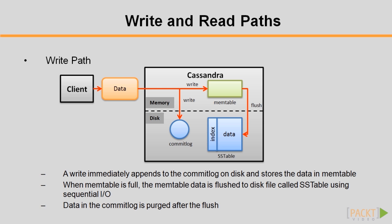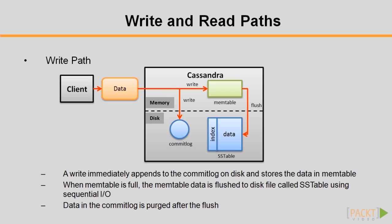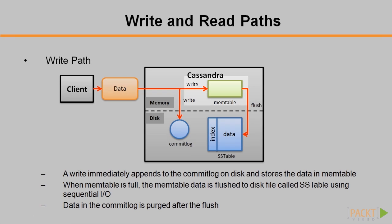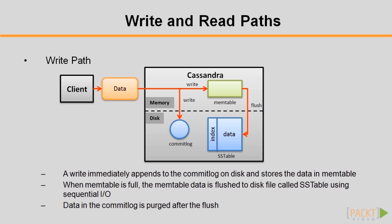First, let's look at a write operation. The components and their sequence of executions form a write path. When a write occurs, the data will be immediately appended to the commit log on disk to ensure write durability. Then Cassandra stores the data in memtable, an in-memory store of hot and fresh data. When memtable is full, the memtable data will be flushed to disk in a file called sstable using sequential I/O. Random I/O is avoided, and that's the reason why write performance is so high. The commit log is purged after the flush.